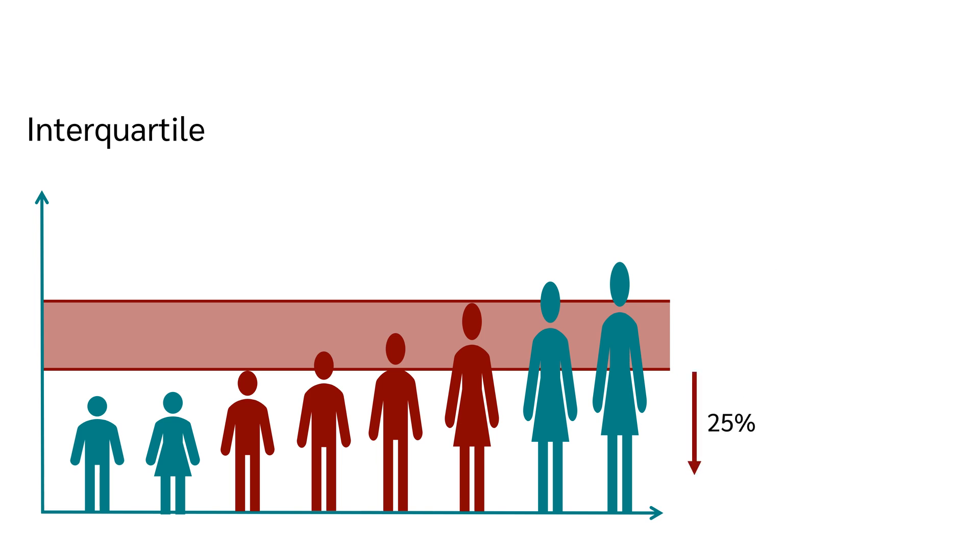Therefore, 25% of the values are smaller than the interquartile range and 25% of the values are larger. The interquartile range contains exactly the middle 50% of the values.